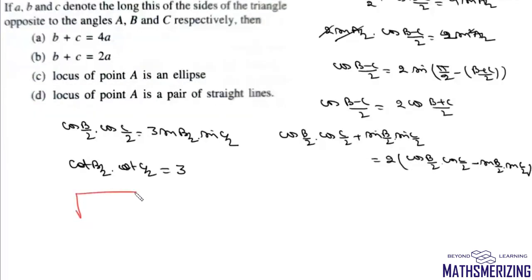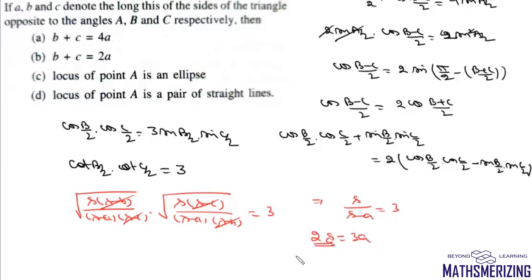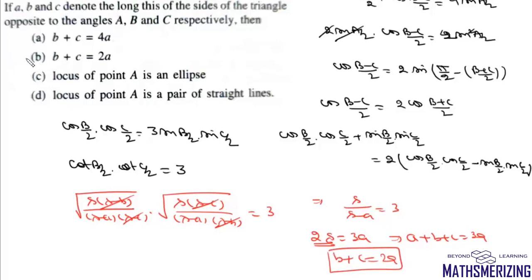From properties of triangles, cos(B/2) = √(S(S−B)/((S−A)(S−C))) and cos(C/2) = √(S(S−C)/((S−A)(S−B))). Substituting and canceling (S−B) with (S−B) and (S−C) with (S−C), we get S/(S−A) = 3, which gives 2S = 3A. Since 2S = A+B+C, we get B+C = 2A, which is option B.